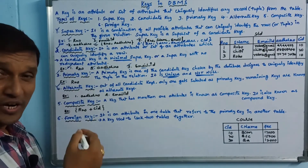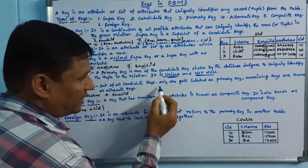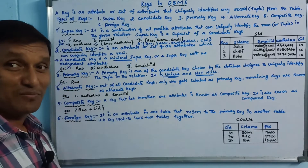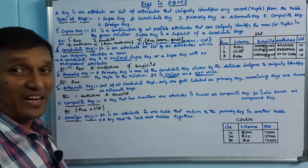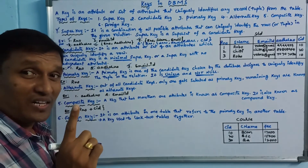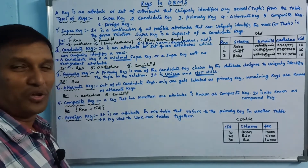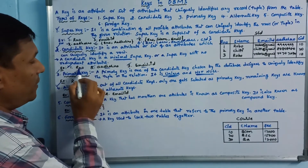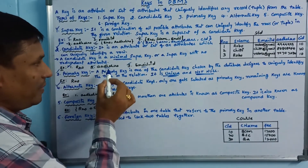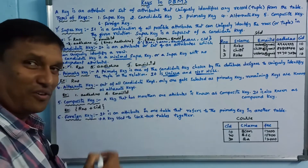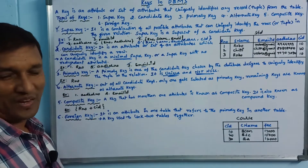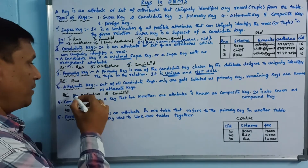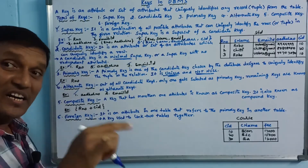Next one is alternate key. Out of all candidate keys, only one gets selected as the primary key — the remaining keys are known as alternate keys. From the candidate keys, one becomes the primary key, and the remaining ones, such as email address, become alternate keys.